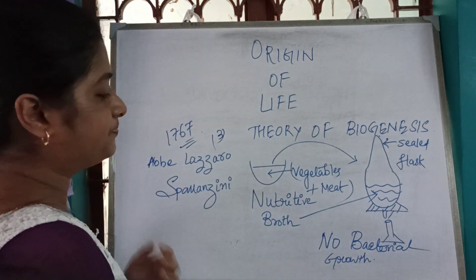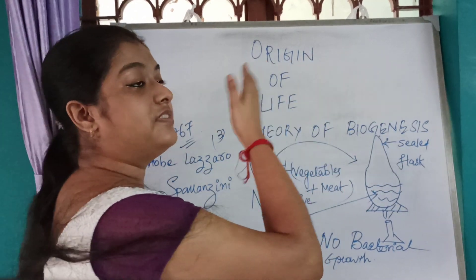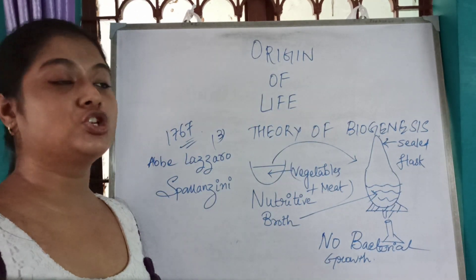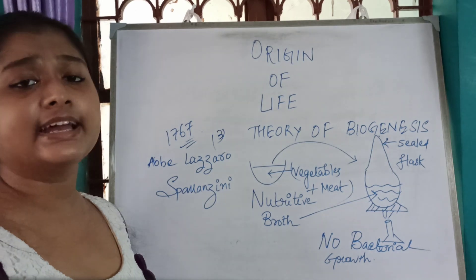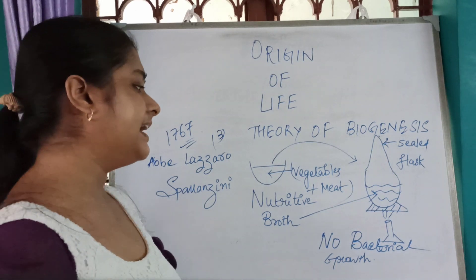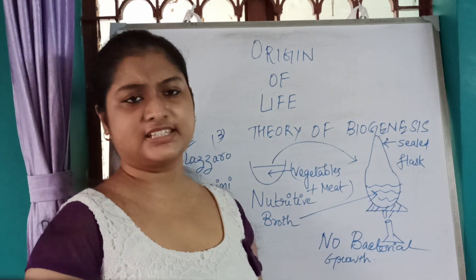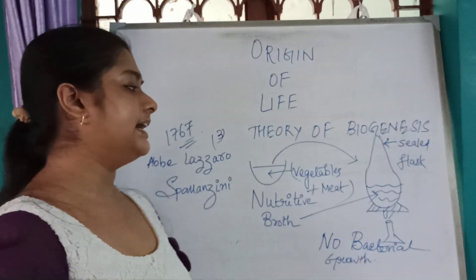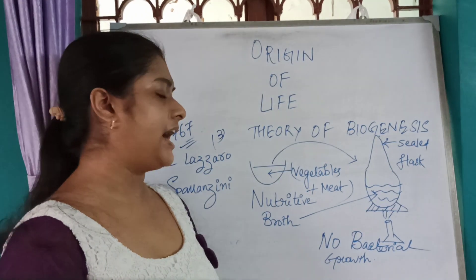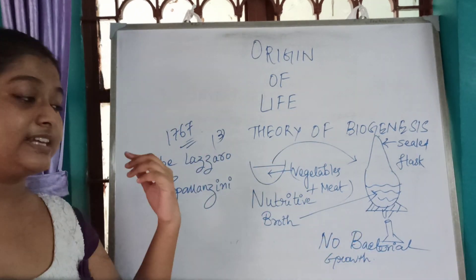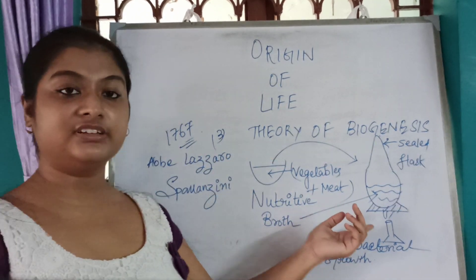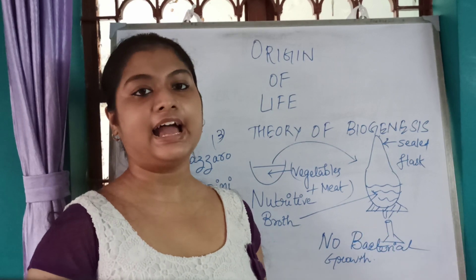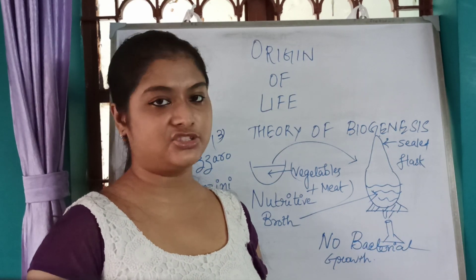There was another scientist, John Needham, who objected that when Spallanzani heated the broth, that was overheating. Spallanzani then broke the seal of the flask.